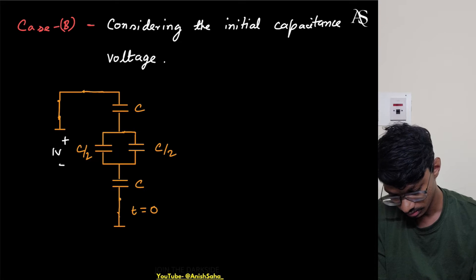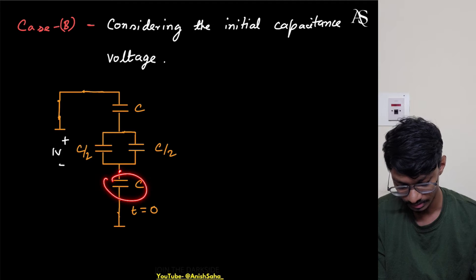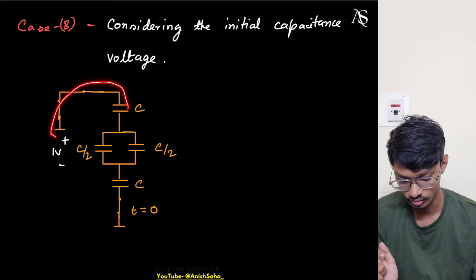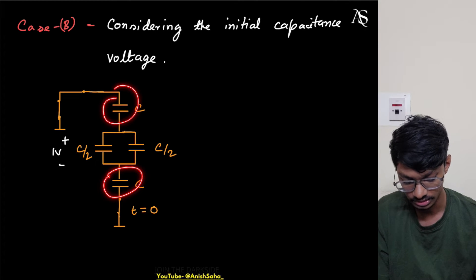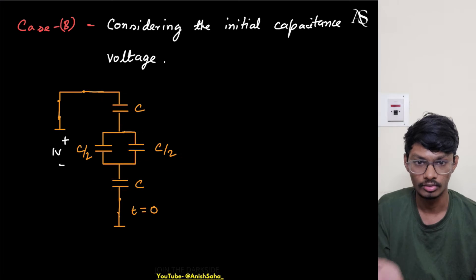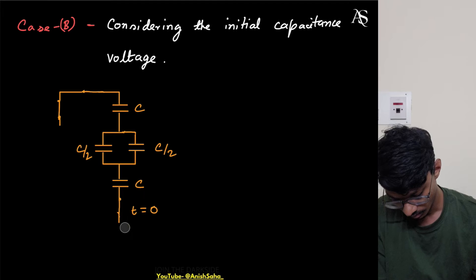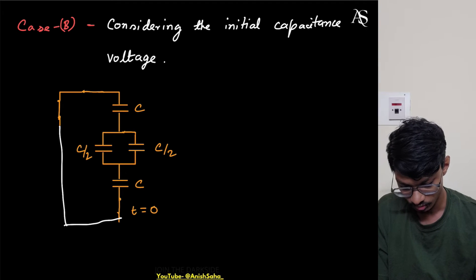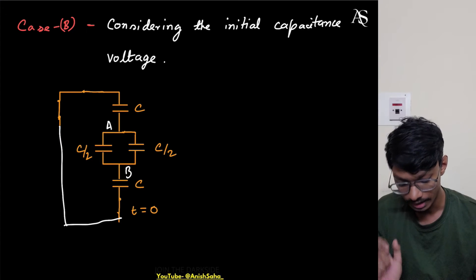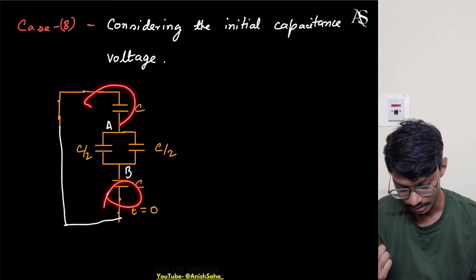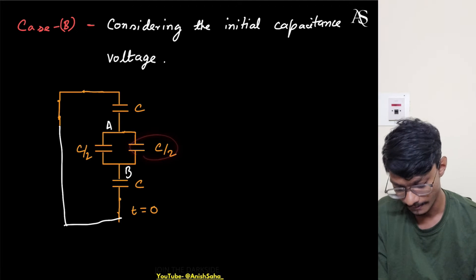This point and this point are ground — these two are connected. This capacitor and this one are connected in series, with the same charge through both. After this, these two points are the same for both capacitors. The series combination is in parallel with C by 2. Marking points A and B, the series combination of these two and then this capacitor gives an overall combination of C.